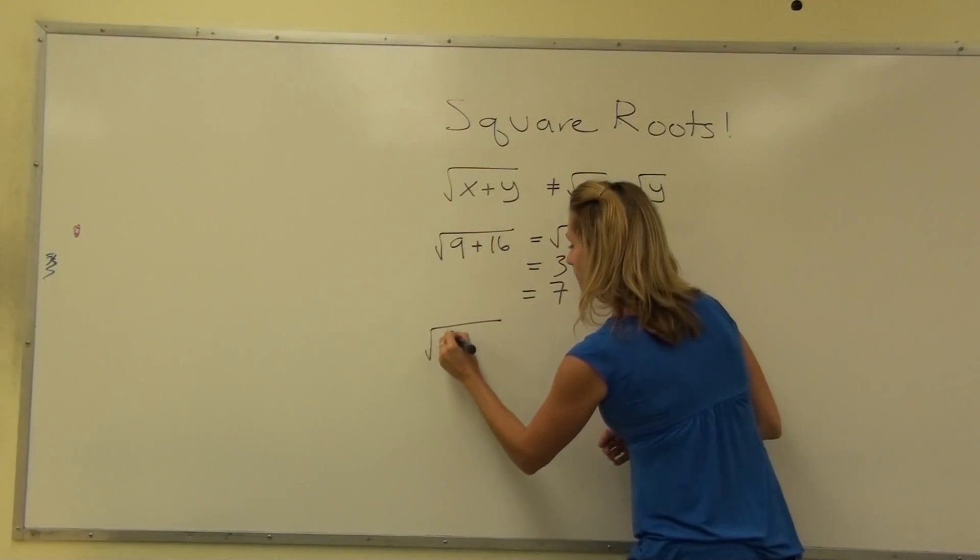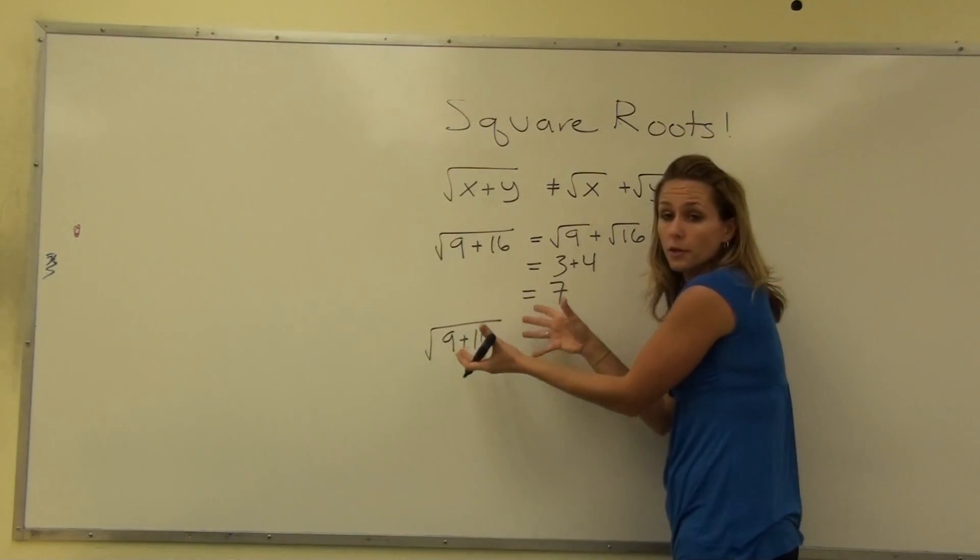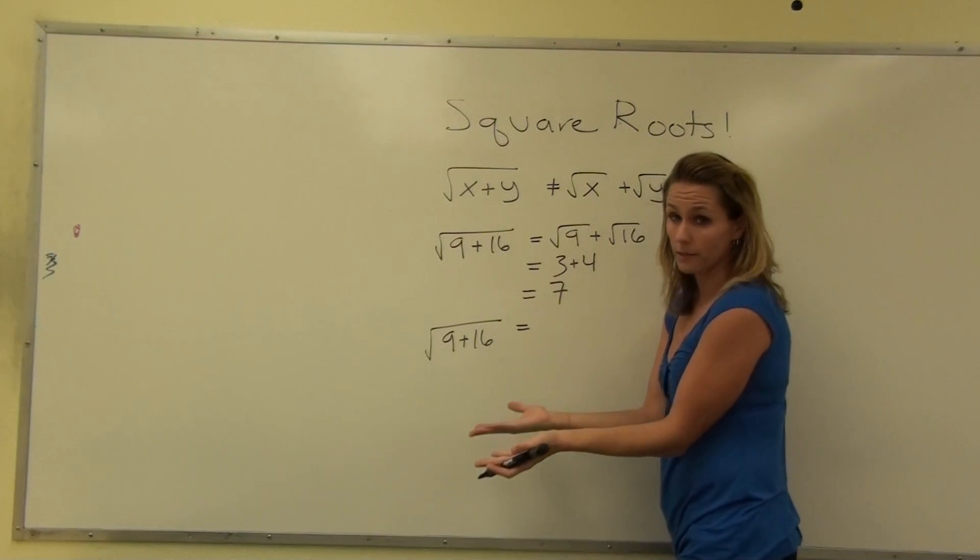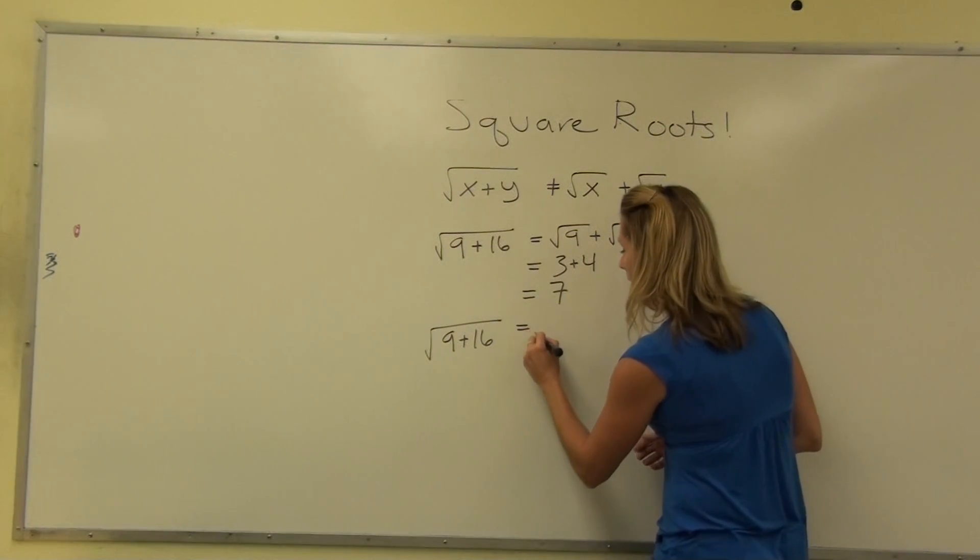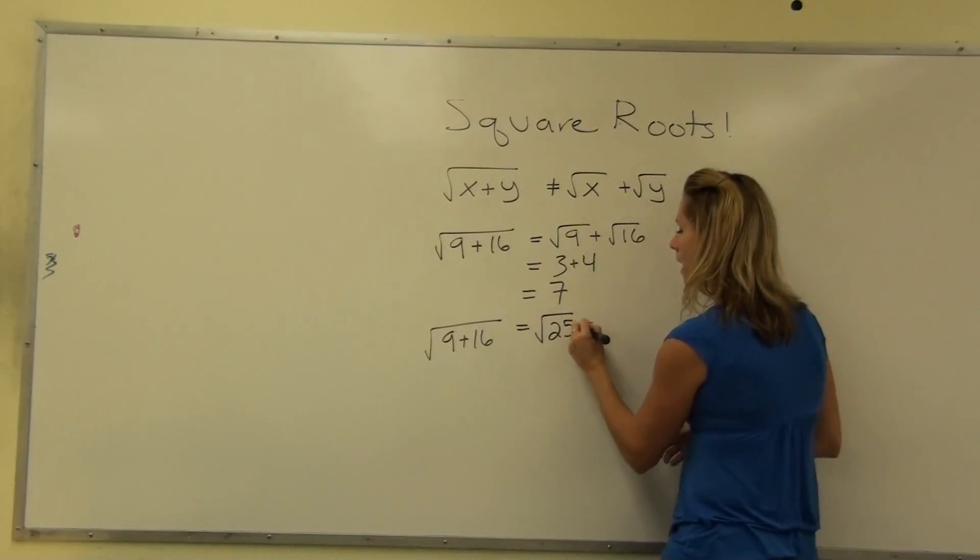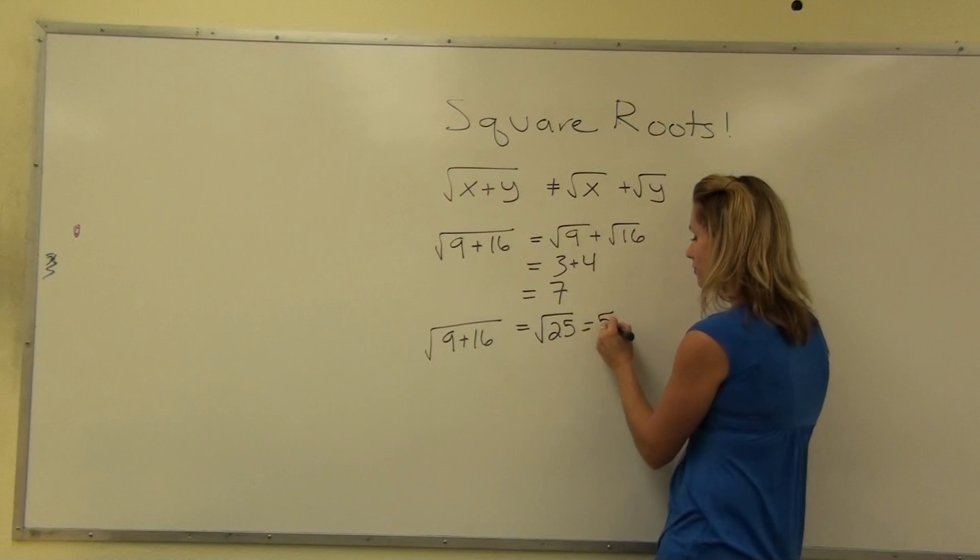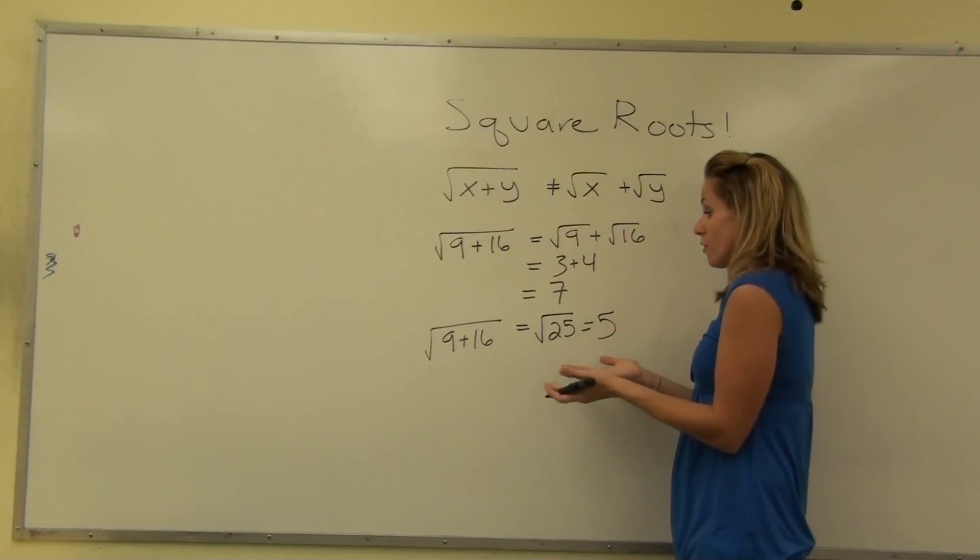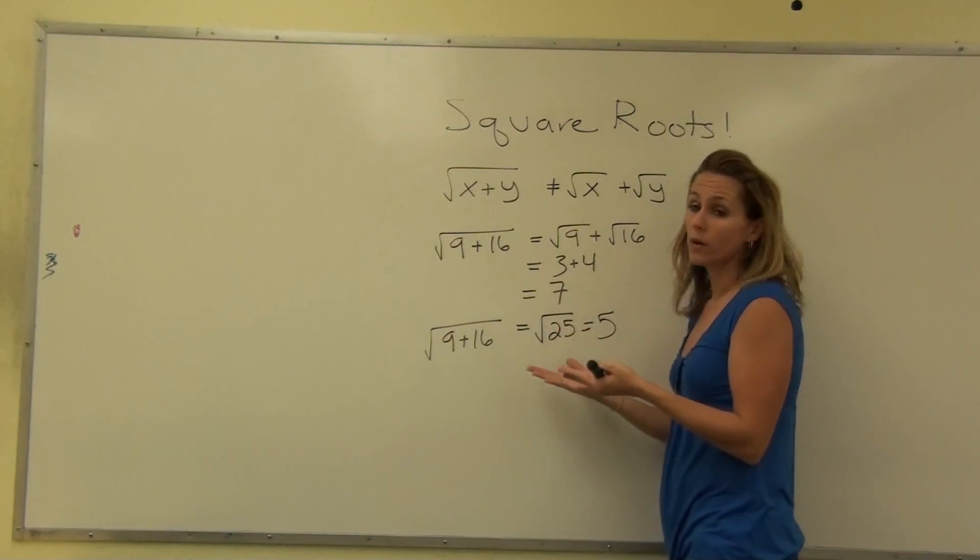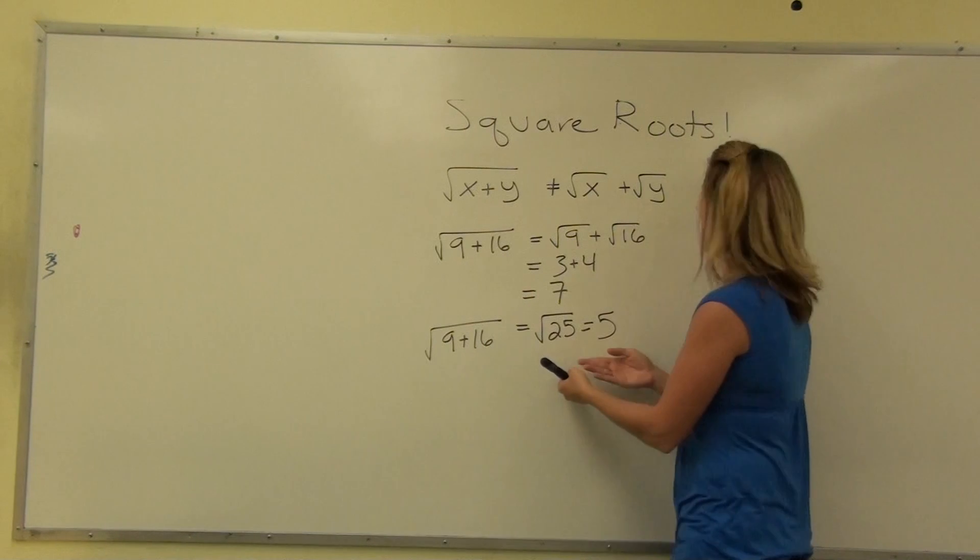But since the square root is a grouping symbol, we know that order of operations would say do what's underneath first. If we add 9 plus 16, because they're like terms, we would have the square root of 25. And we know, since that's a perfect square, that the square root of 25 is just 5. Unfortunately, 7 and 5, not the same number. Only one of these is right, and I'm here to tell you that it is this one.